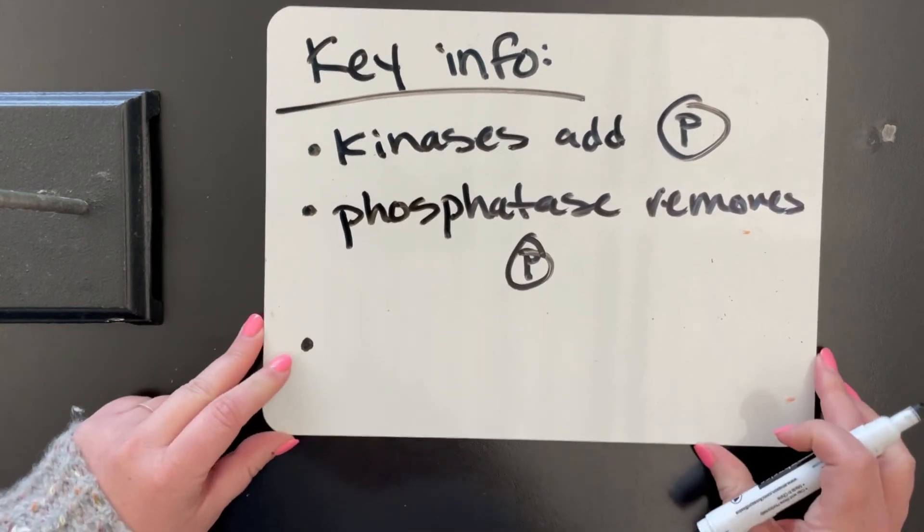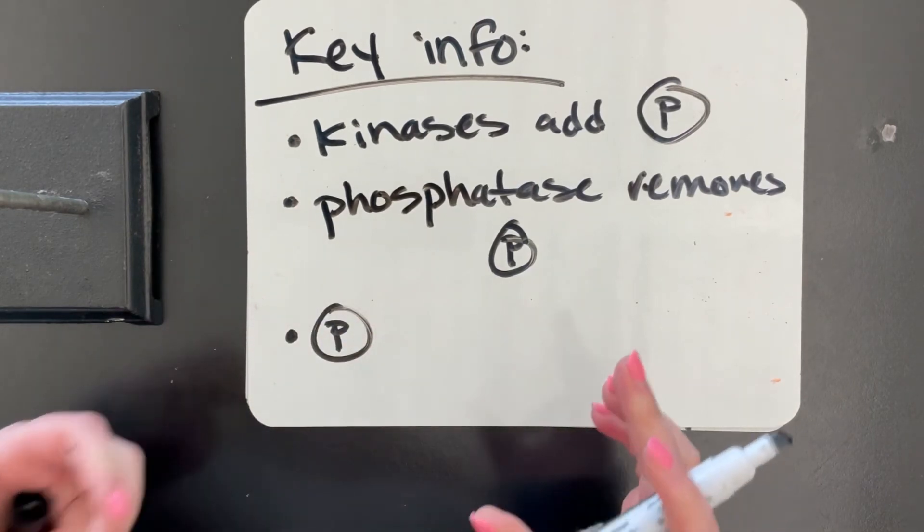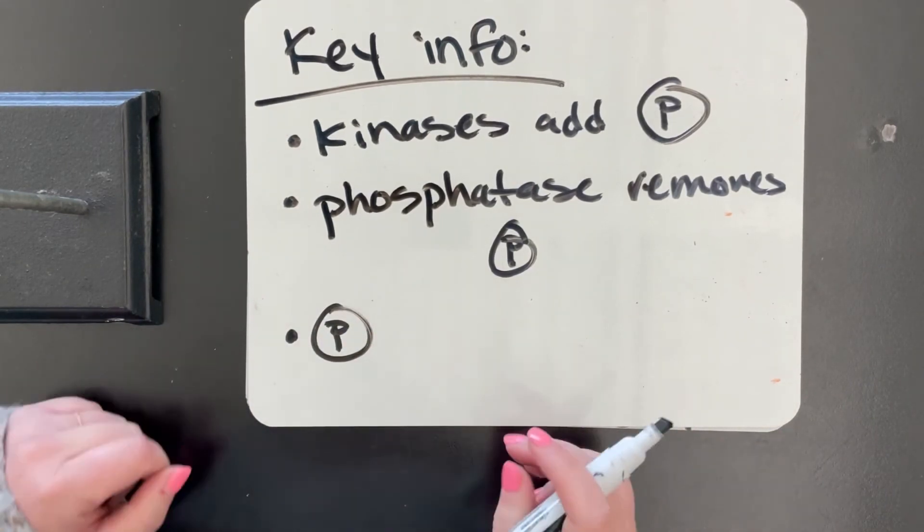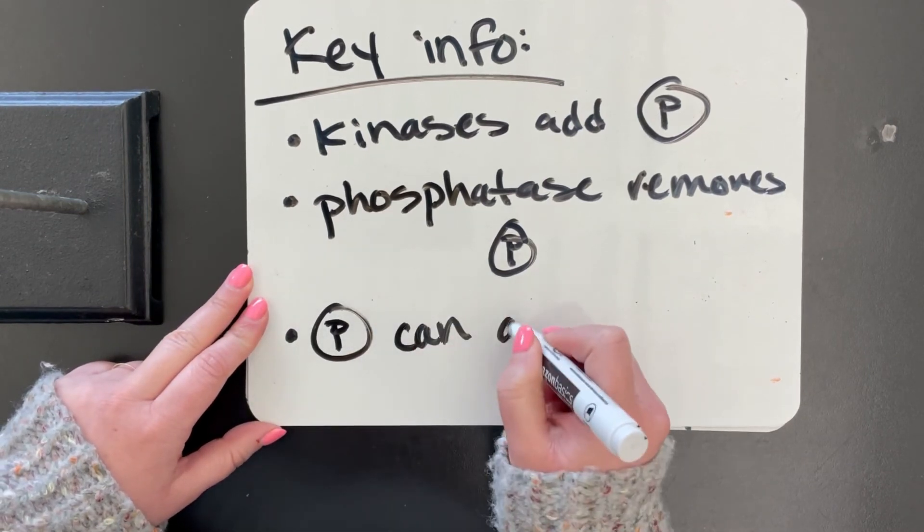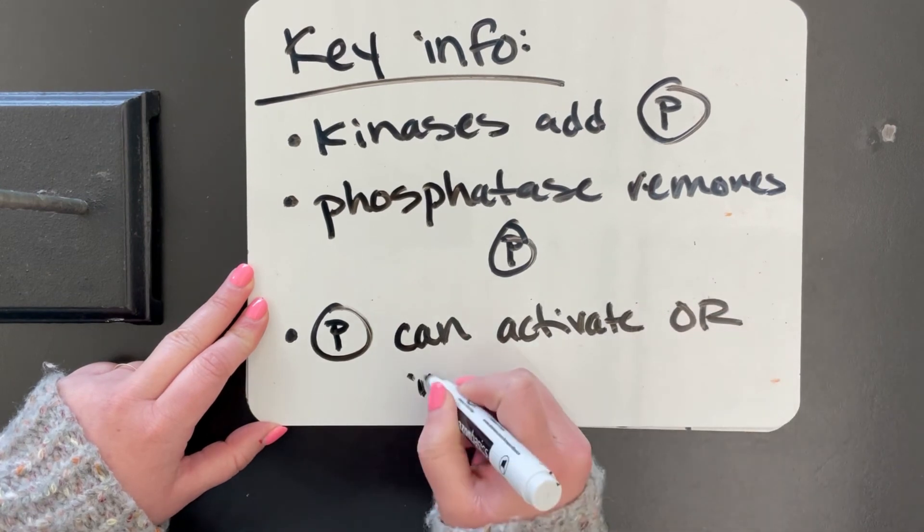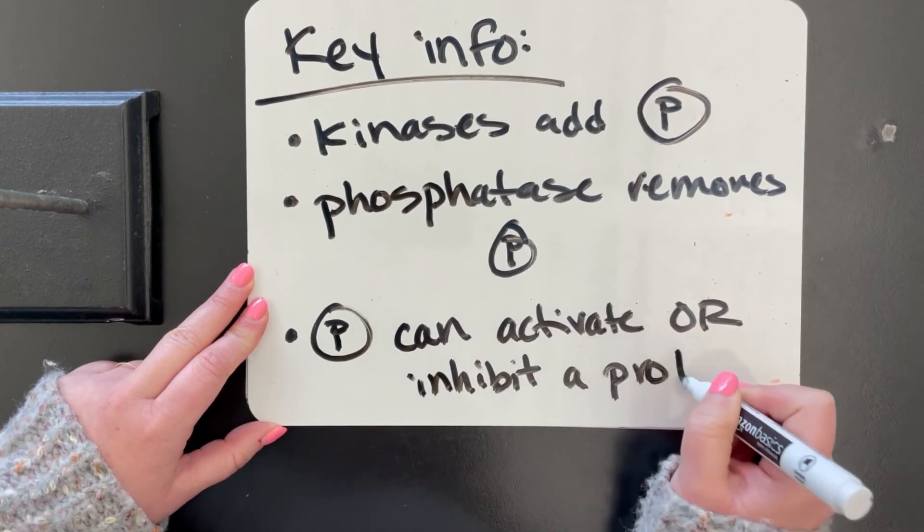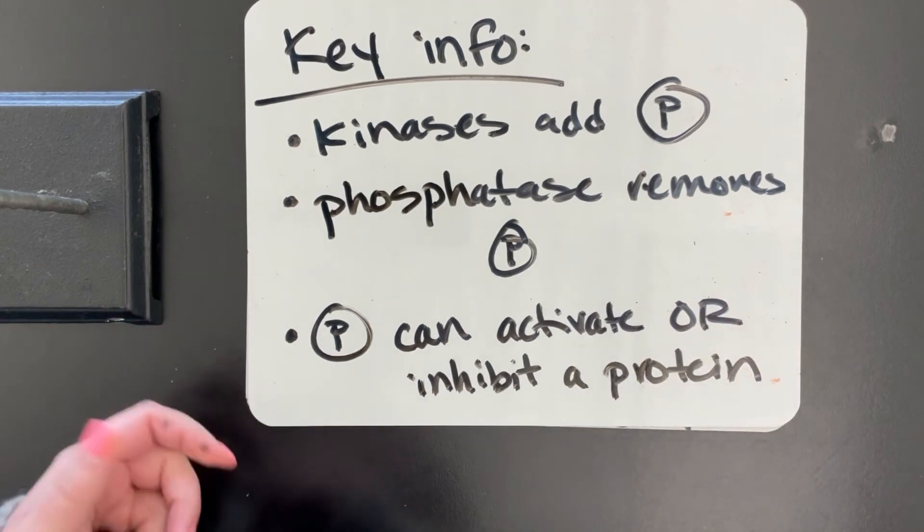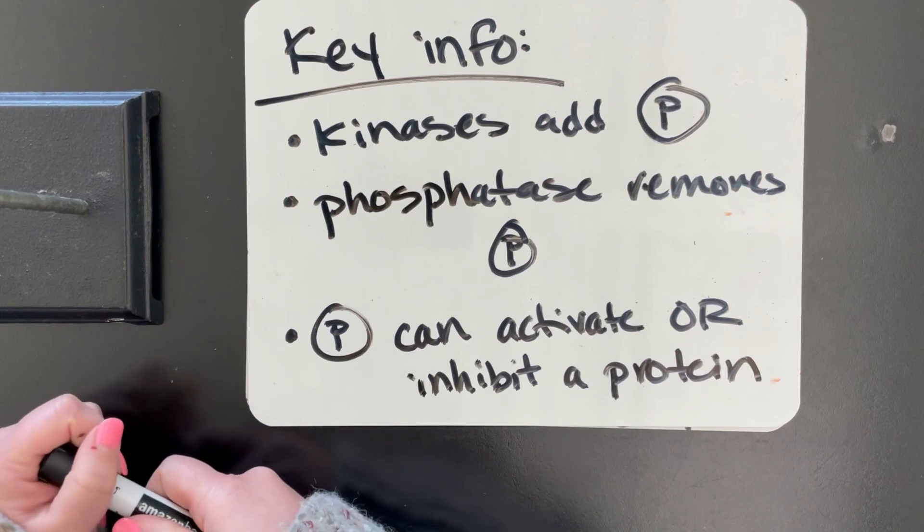And then finally, the other key thing to keep in mind is that phosphorylation can activate or inhibit a protein. It just depends on the protein we are talking about. So phosphorylation can activate or inhibit. This is a common misconception that phosphorylation only activates, but it can do either. It's just going to depend on the specific protein that we're talking about.